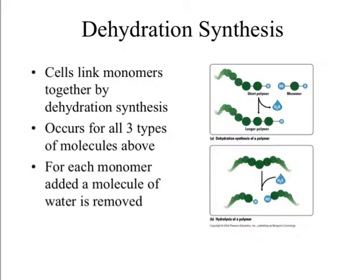The way our cells link smaller monomers together to make long polymer chains is fairly simple and consistent. It's called dehydration synthesis. When monomers come together, a water molecule is removed, and we get the monomers sticking together to form a polymer. One after another, we take out a water molecule and that monomer sticks to the chain — and it keeps growing. This occurs for all the different types of macromolecules: proteins, carbohydrates, and nucleic acids. Dehydration means you're taking out water in order to put monomers together as a polymer chain.